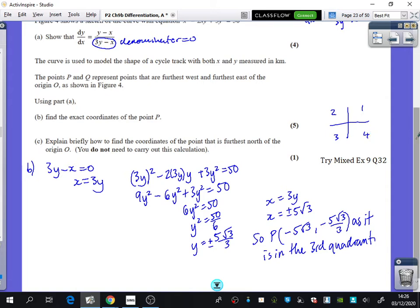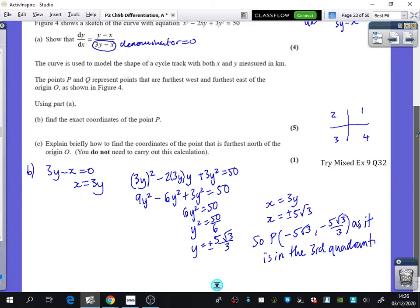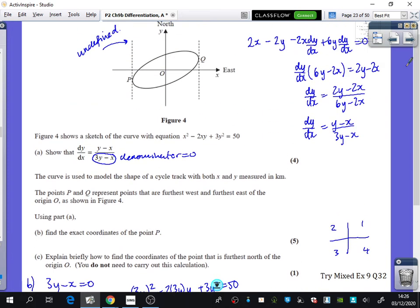And then part C of the question says, explain briefly how to find the coordinates of the point that is furthest north of the origin. So it is talking about this point here. We were just, as a class, we were saying, is it talking about this point here? Well, no, it's not talking about north of the origin. It's just saying, what is the furthest northern point that there is? So it's this one at the top.